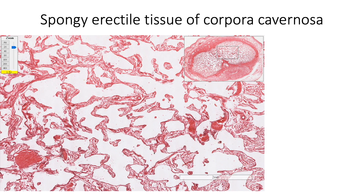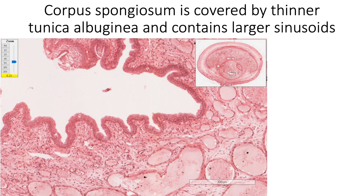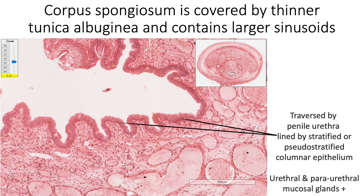Corpora cavernosa are made up of spongy erectile tissue containing smooth muscle trabeculae and large irregular sinusoidal spaces lined by endothelium. Corpus spongiosum is covered by thinner tunica albuginea and it contains larger sinusoids; it is traversed by the penile urethra, which is lined by stratified columnar epithelium or pseudostratified columnar epithelium. This lining epithelium becomes stratified squamous non-keratinized epithelium in the navicular fossa and becomes keratinized epithelium at the external meatus. A number of urethral and paraurethral glands which secrete mucosecretions are also found in the wall of penile urethra.